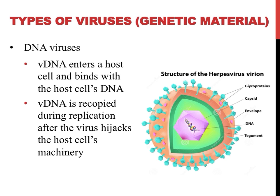The virus then takes over the host cell's DNA replication machinery and more viruses are produced, which then can go out and infect new cells. DNA viruses can contain single or double-stranded DNA, and one example of a DNA virus would be the herpes virus, which is shown on this slide.